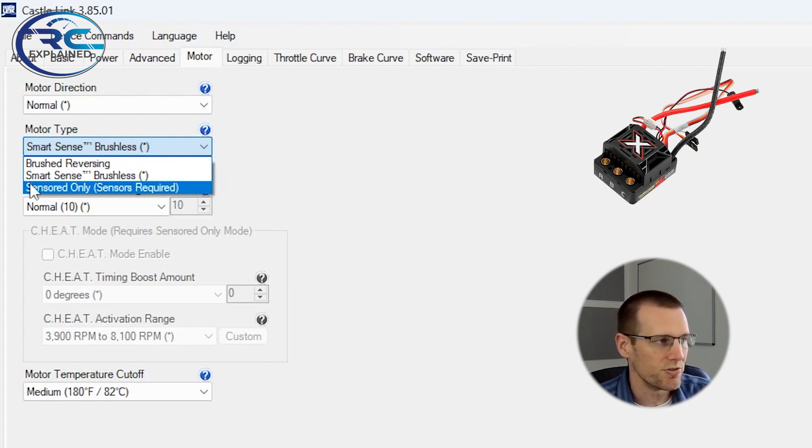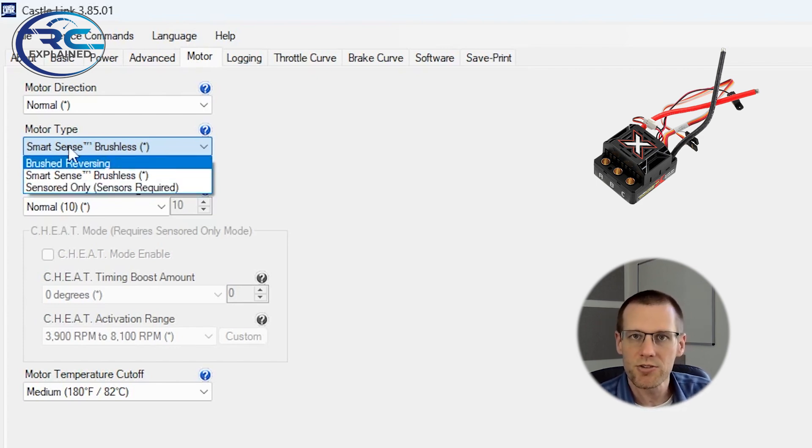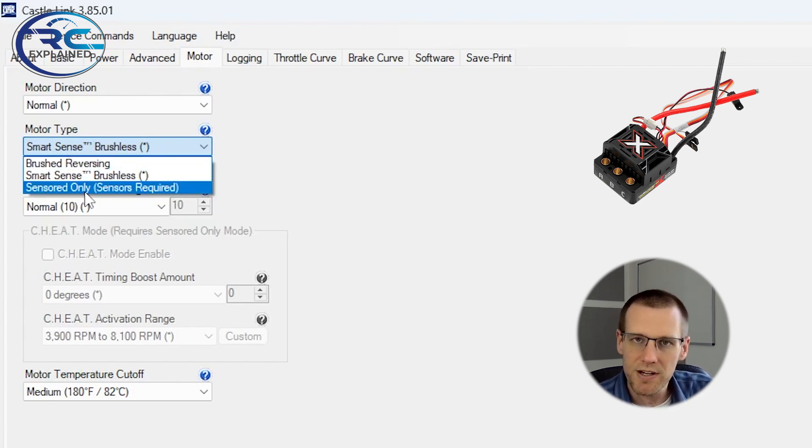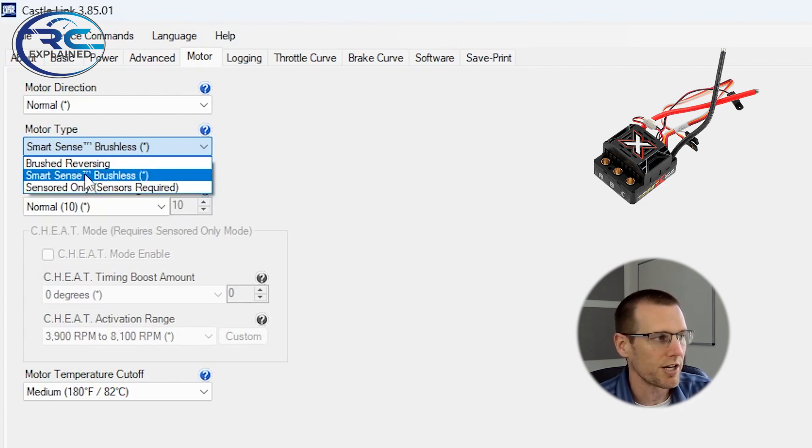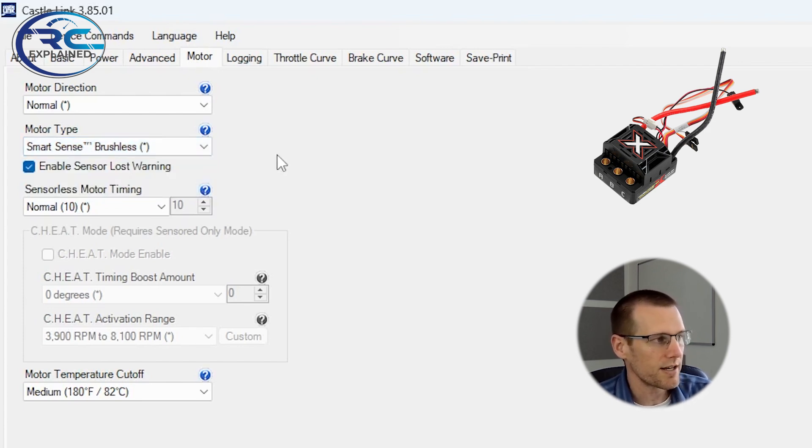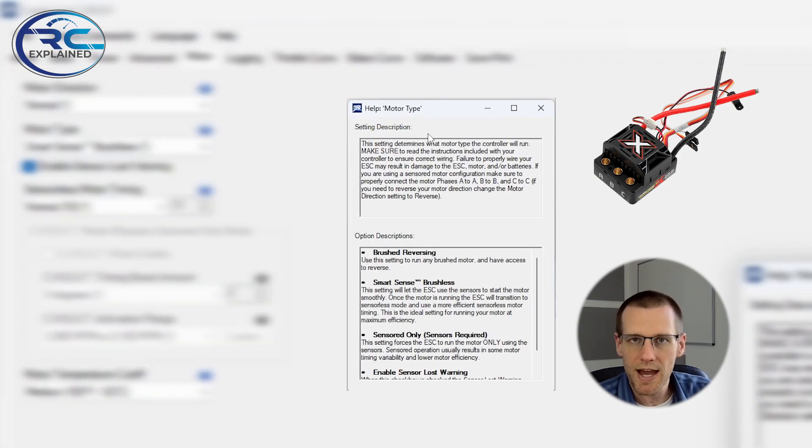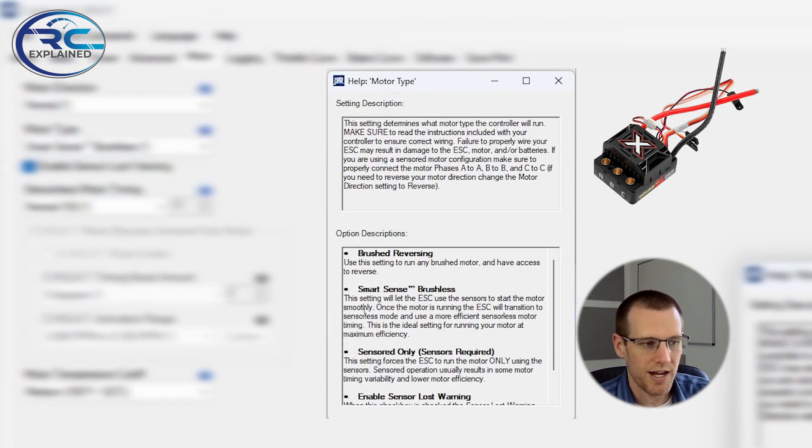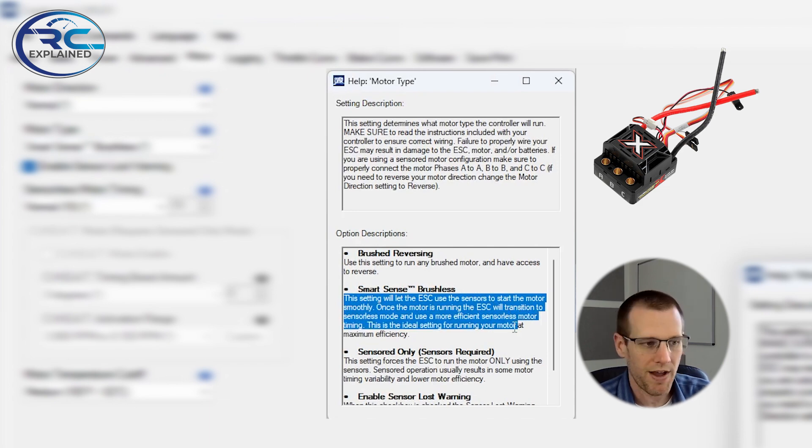And what I did find in new electronic speed controls is that this specific option is not even available. So you can't make the wrong selection in a newer electronic speed control from Castle Creations, especially the one that I looked at. So let's select the smart sense because we definitely want that. And we're going to look at what this actually does as it says it right from the manufacturer.